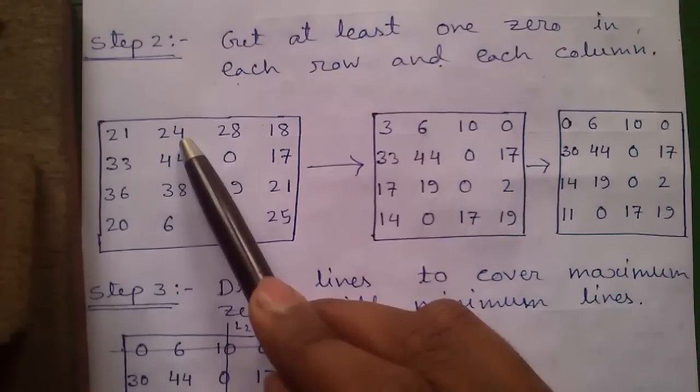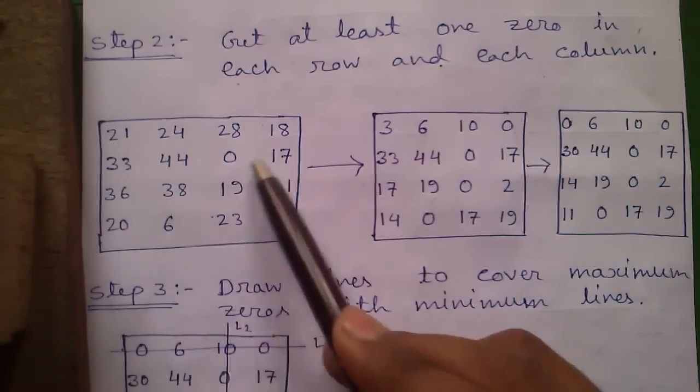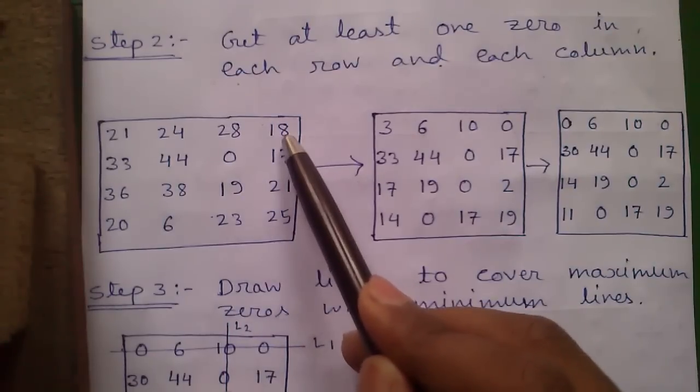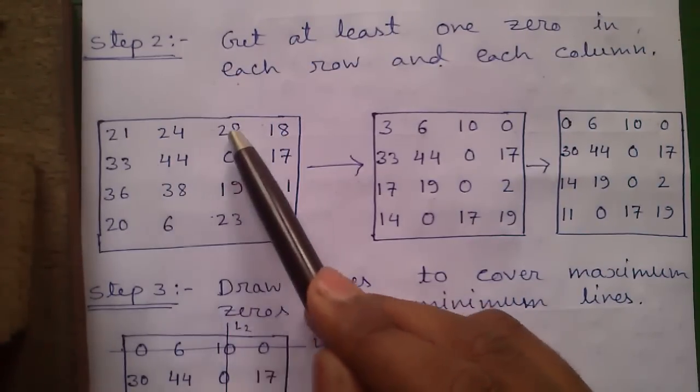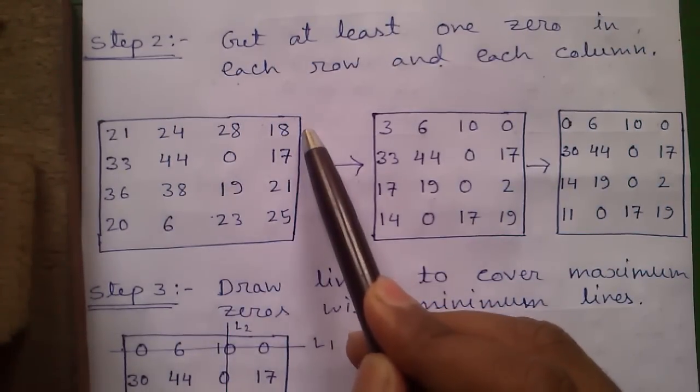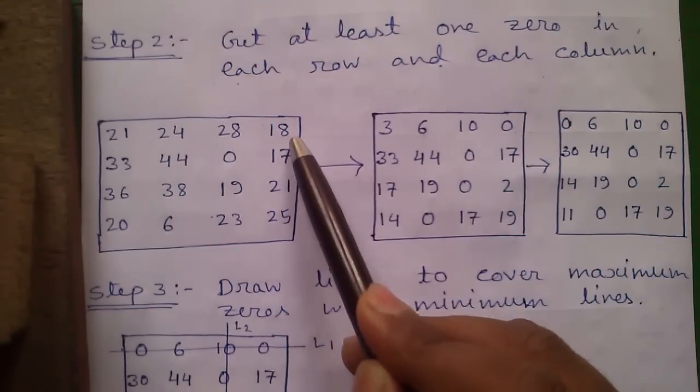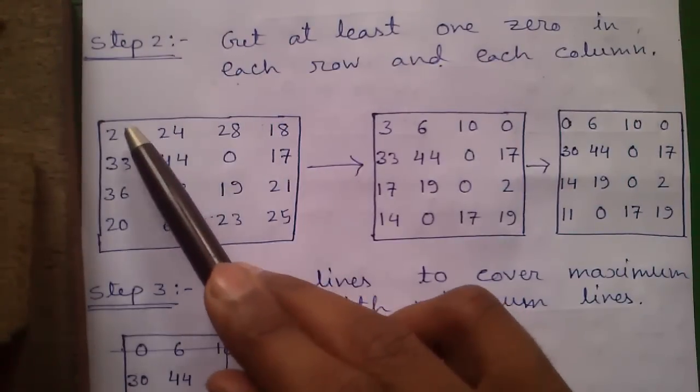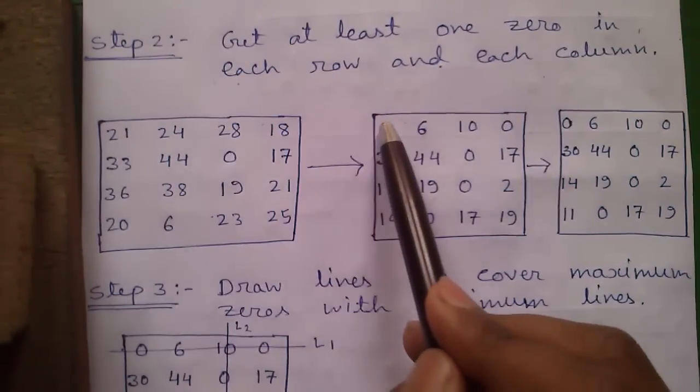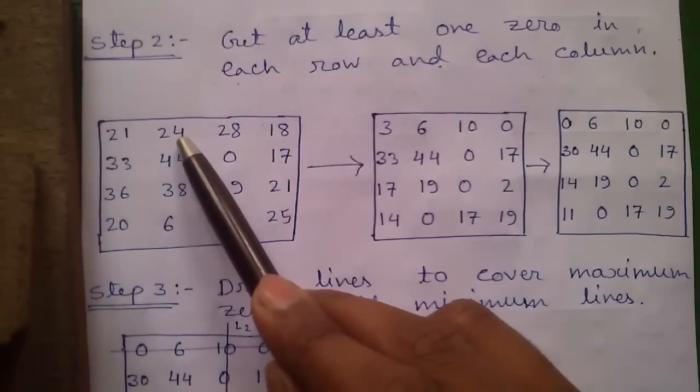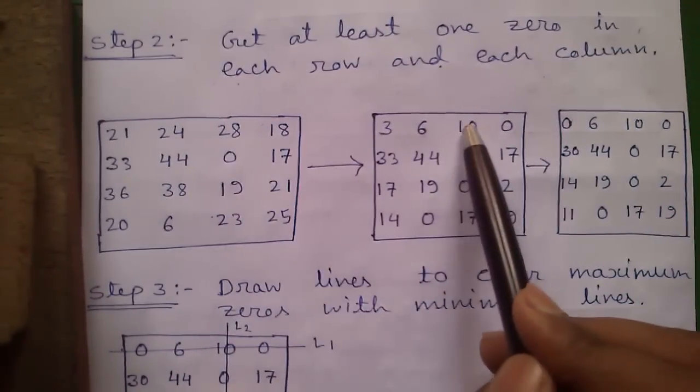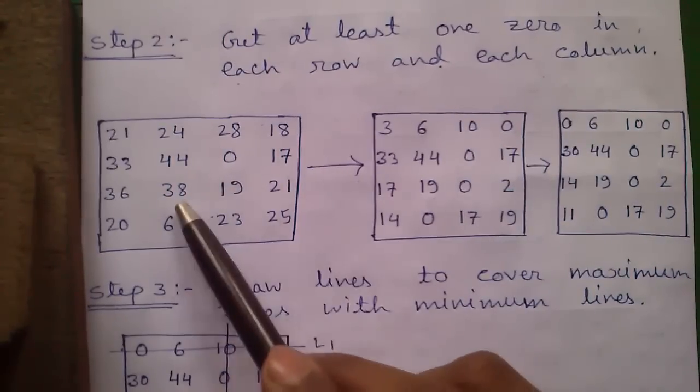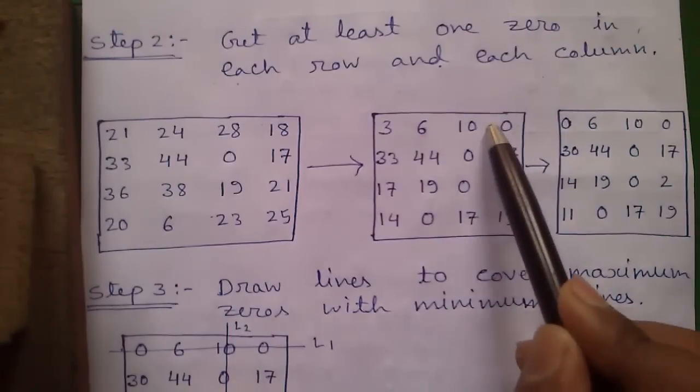To get at least one zero, scan each row and column for the smallest number and subtract that number from all the numbers in that row or column. Here in row 1 the smallest number is 18. So subtract 18 from all the numbers in row 1. That gives us 21 minus 18 equals 3, 24 minus 18 equals 6, and 18 minus 18 equals 0.